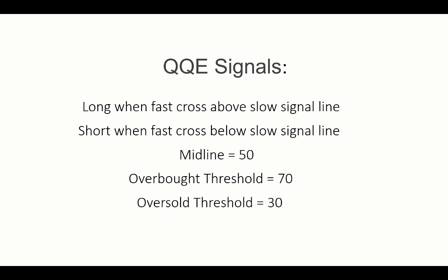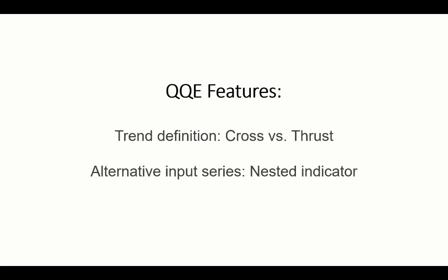Finally, we'll look at how to choose between the two trend definitions offered with the QQE indicator — cross versus thrust — and also how to set up a nested input. That's when you apply one indicator to another, which in some cases can be quite helpful to create custom indicators.